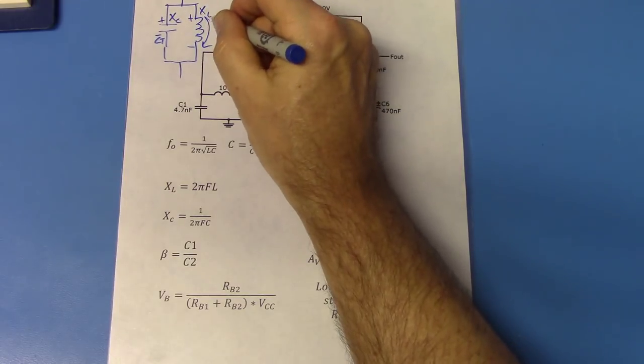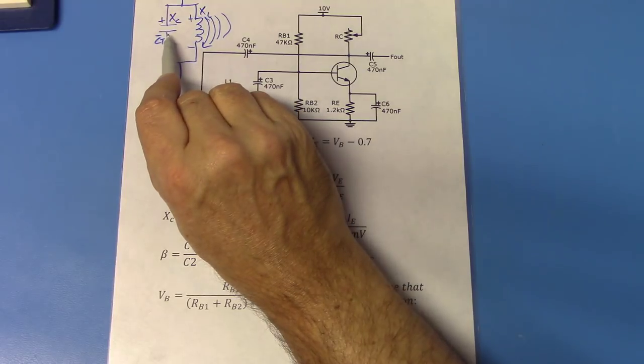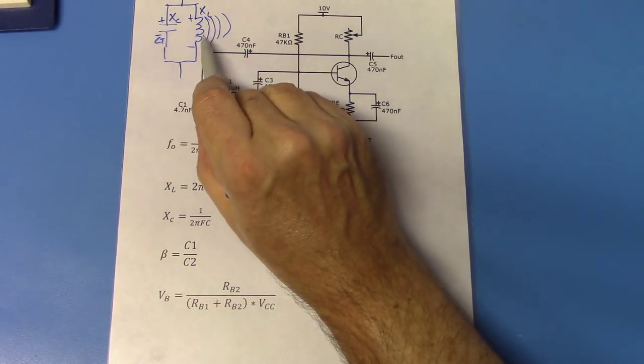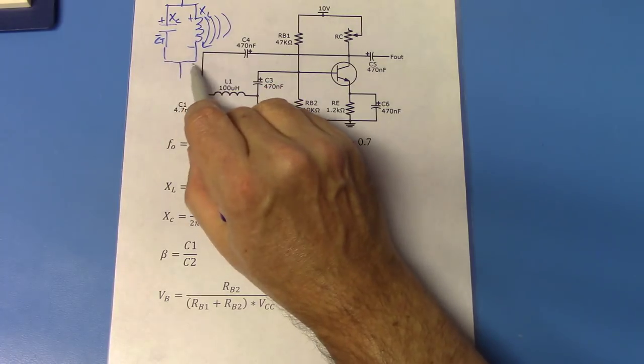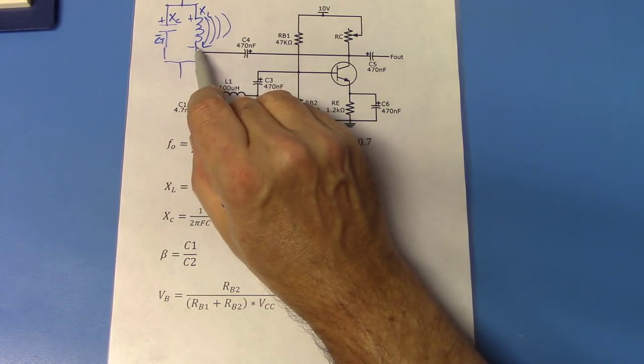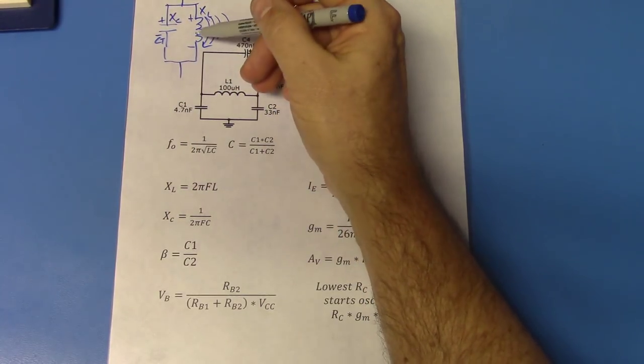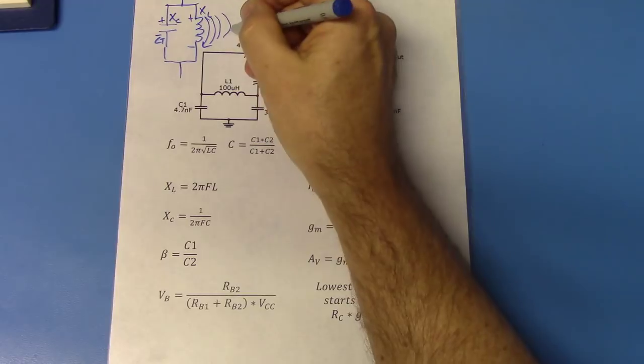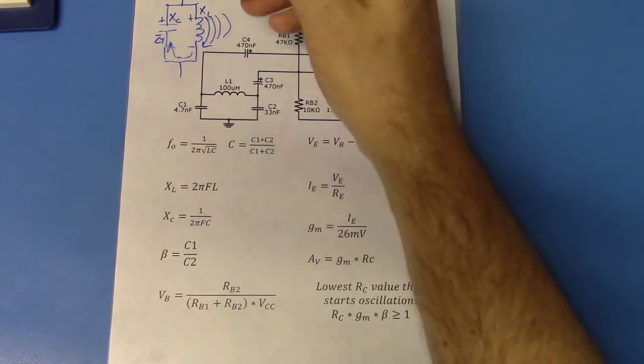And that inductor then, of course, is going to build up a magnetic field. And eventually the capacitor is going to discharge completely. The inductor's magnetic field then will be as large as it can get. As soon as it senses a drop in the applied current, the magnetic field collapses, and it induces the voltage back into the circuit in the opposite direction. And we can thank Faraday for discovering that.